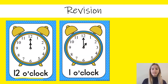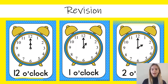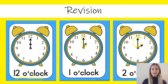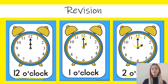Now we have one o'clock and then we have two o'clock. What you can see is that our minute hand, our long hand, always stays in the same spot for an o'clock time. And then our short hand is going around until it gets to the one, and over here for two o'clock it went around to get to the two.